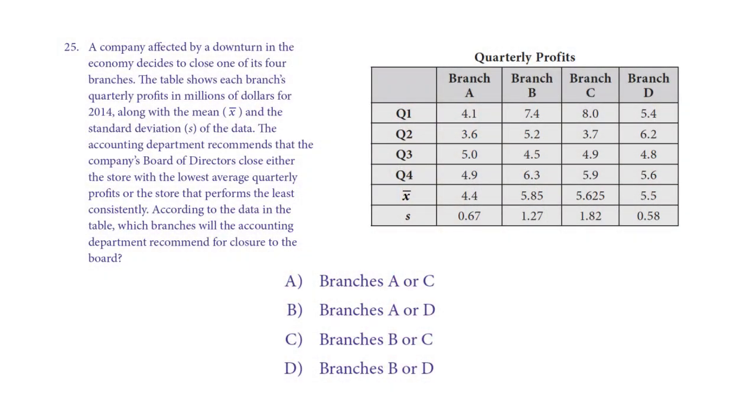Standard deviation is a measure of consistency. The higher it is, the less consistent it is because data is just flying all over the place. So that means that branch C is our least consistent branch. So it's going to be either A or C, which is answer choice A.